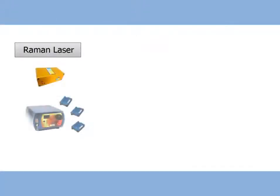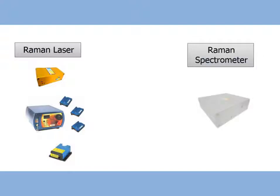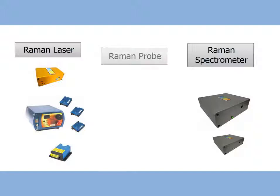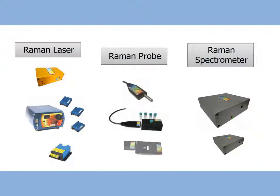A Raman Spectrometer system consists of a Raman laser generally characterized for high output power and sharp line width, a Raman Spectrometer which is configured for high resolution and high sensitivity simultaneously, and a Raman probe which delivers the laser light to the sample and returns the scattered light back to the spectrometer.